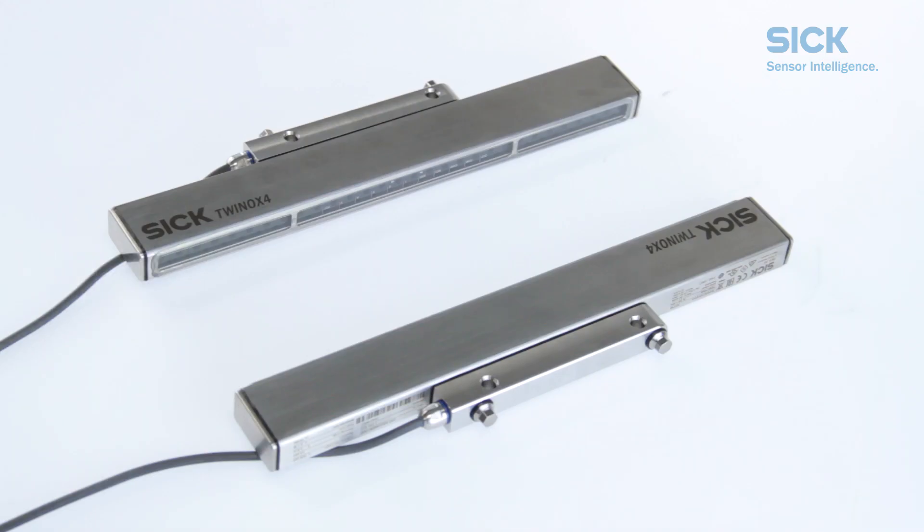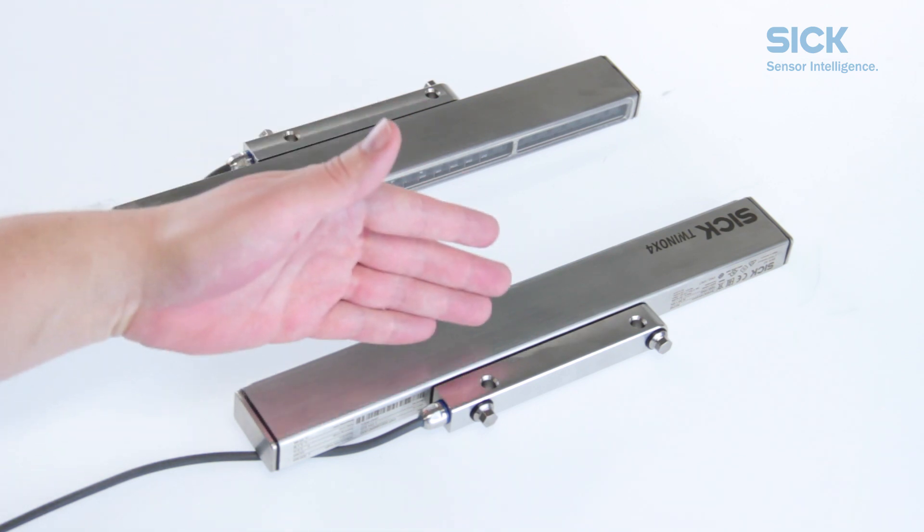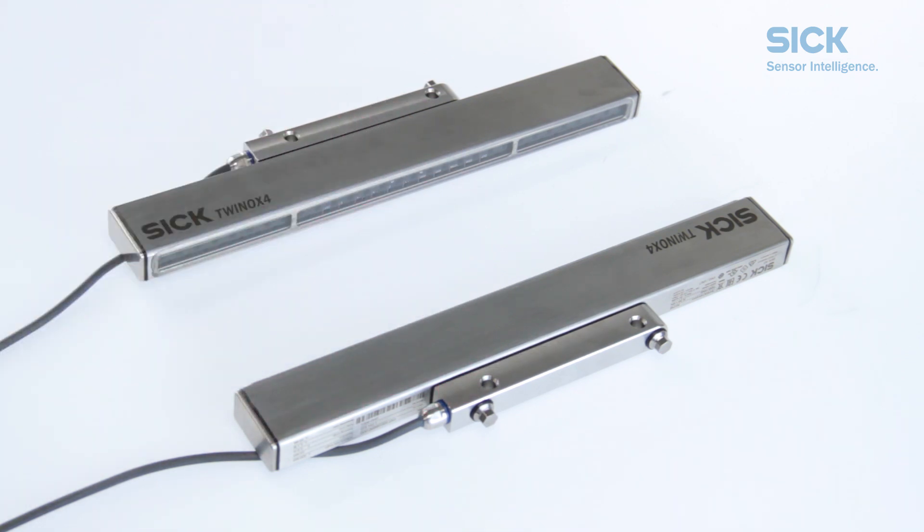Please note that the TWINOX 4 safety light curtain consists of two identical twin sticks. Each TWINOX 4 stick contains both the sender as well as the receiver unit.